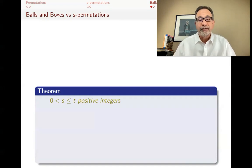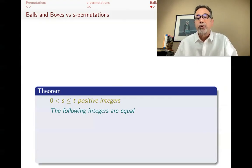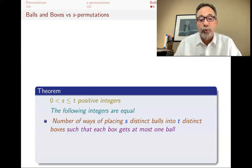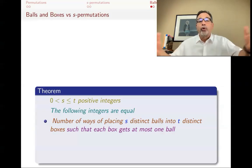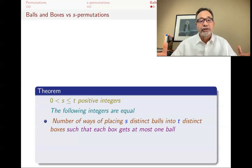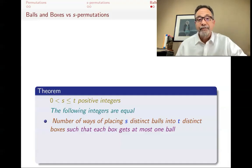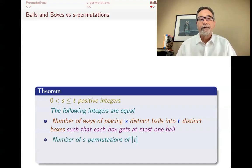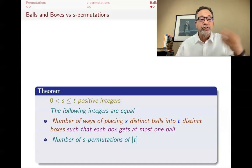Let's say that s and t are both positive integers, and s is less than or equal to t. I'm going to claim that the following integers are equal: the number of ways of placing s distinct balls into t distinct boxes so that every box gets at most one ball — remember t is greater or equal to s, so I might have more boxes than balls — is the same as the number of s-permutations of bracket t. So I'm translating s-permutations to a balls-and-boxes problem, and the number of s-permutations is a falling factorial t lower s.